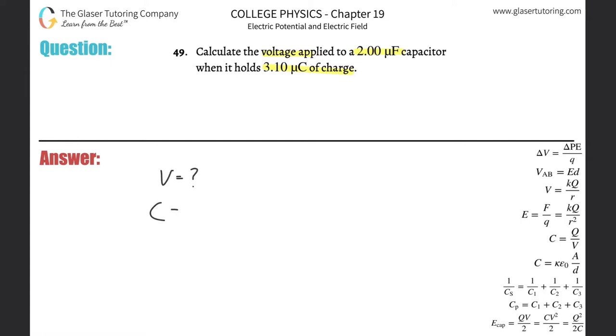They tell us the capacitance C is going to be two microfarads, but we need that in farads, so that's times 10 to the minus 6. And then the charge, they gave it to us in microcoulombs, but we need that in coulombs, so simply multiply that by 10 to the minus 6.